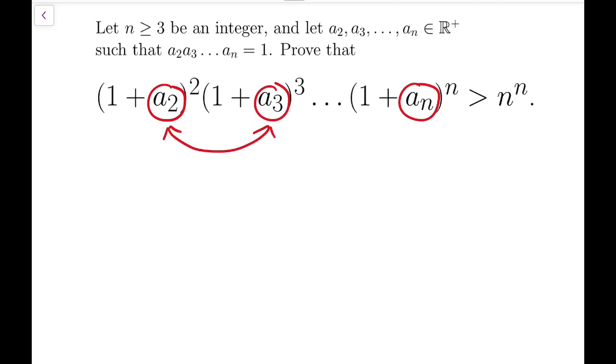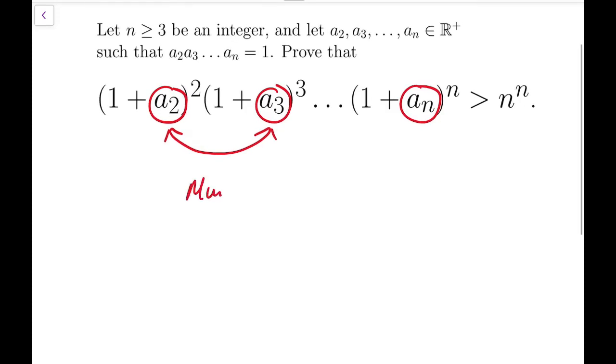Then in those situations we can bring in some very powerful machines, like Muirhead inequality, Schur's inequality, which are very useful in dealing with symmetric polynomials. But in this case, if we swap a₂, a₃, or say a₂ and aₙ, then the whole thing would be completely different. So we need to come up with some other kind of cleverer ideas.